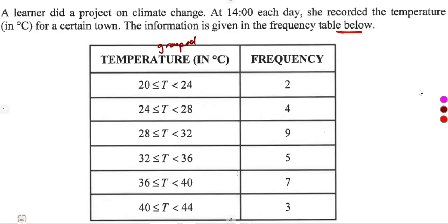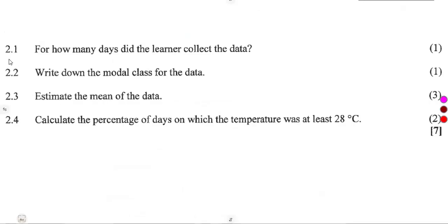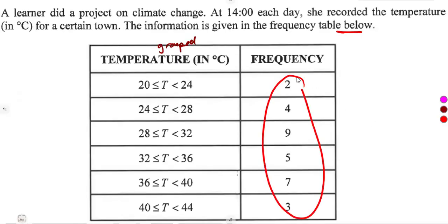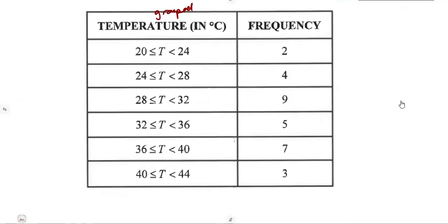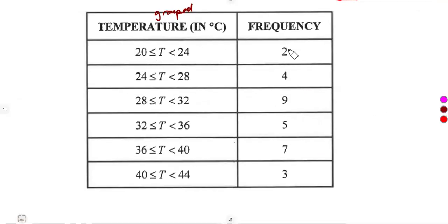And their corresponding frequencies. From this part, we are given 2.1: For how many days did the learner collect the data? From the given frequencies, each and every day this was the temperature given. So we add the frequencies as they correspond to the number of days. This one was recorded 2 days, 4 days, 9 days, and so on. That's the sum of the given frequencies.